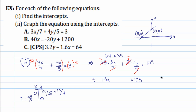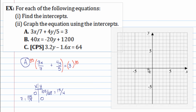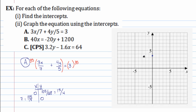To graph this, I plot zero comma 15/4 — since 4 goes into 15 three times with a remainder, that's about 3.75, so roughly three and three-quarters up on the y-axis — and then 7 comma 0, which is 7 units to the right on the x-axis. Connect the two points and you have your line. You can see this intercept method is much faster than building a full table of values. This is called the intercept method for graphing.